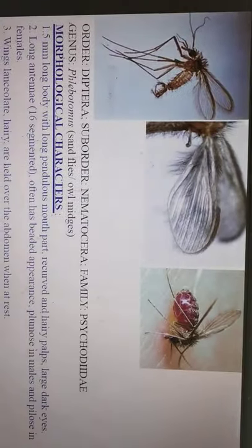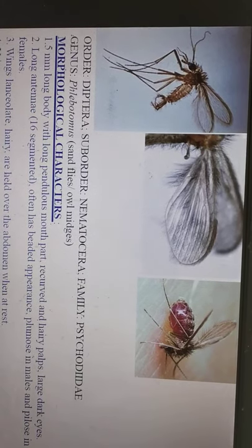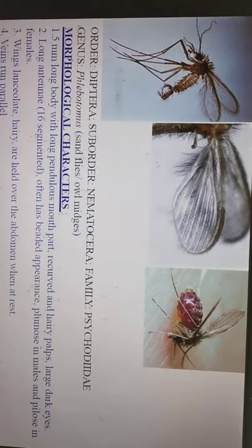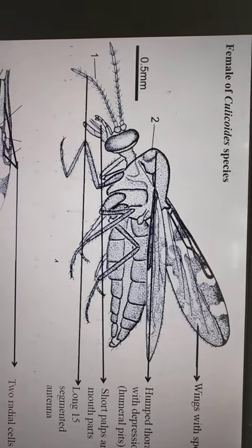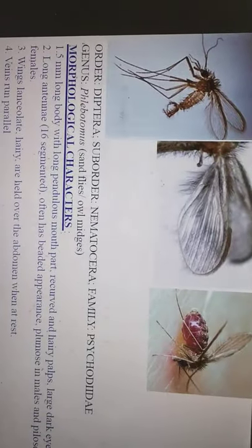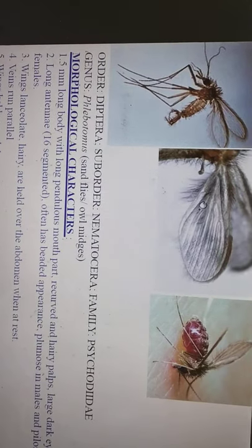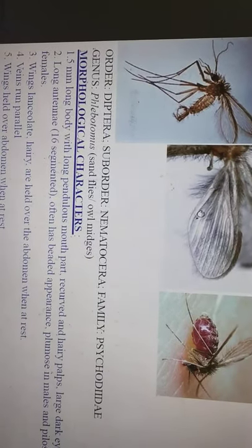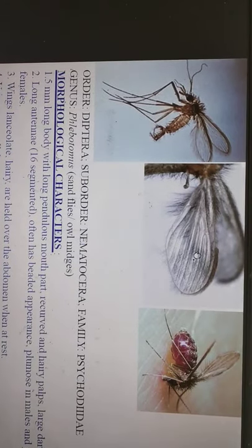Now coming to Phlebotomus, which comes under the family Psychodidae. Very important differences are visible in the wings, legs, and mouthparts. Phlebotomus has long, pendulous, hanging mouthparts — unlike the others which are comparatively shorter and not hanging. The wings have a lot of hair and are lanceolate-shaped — lancet-shaped wings.